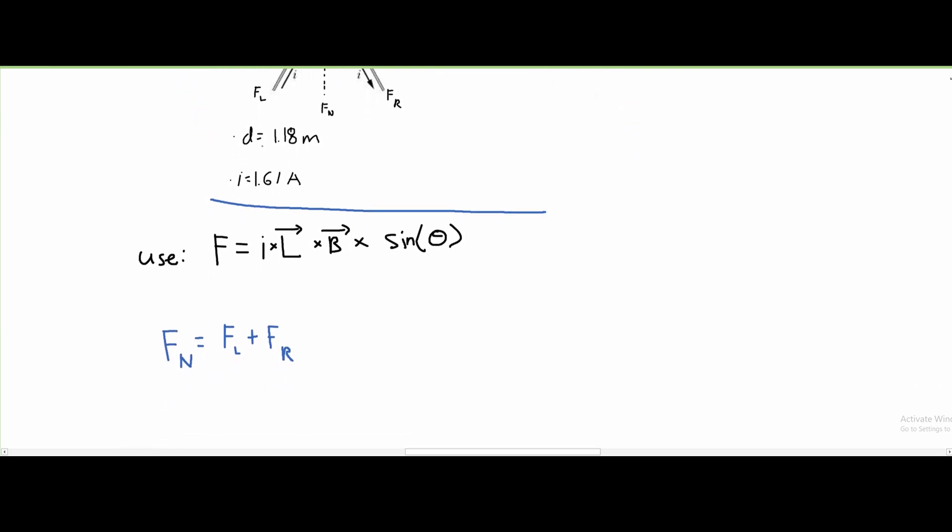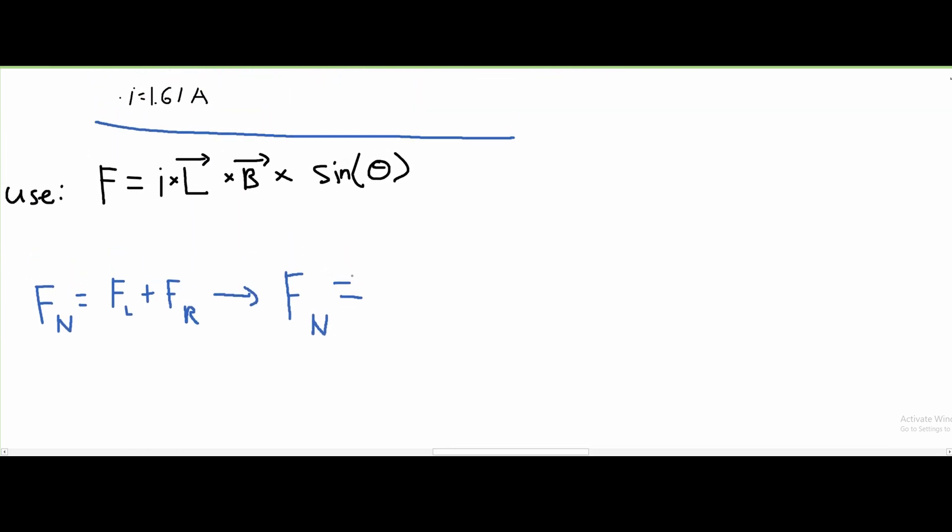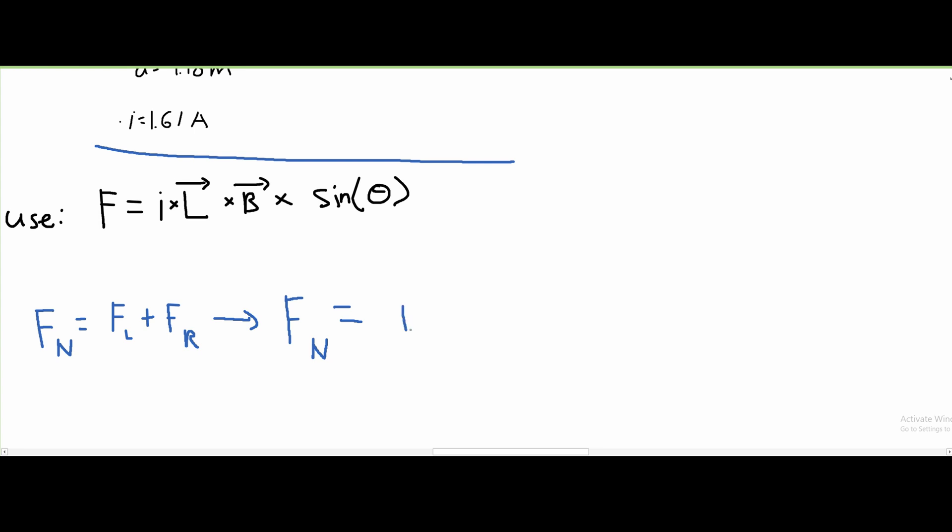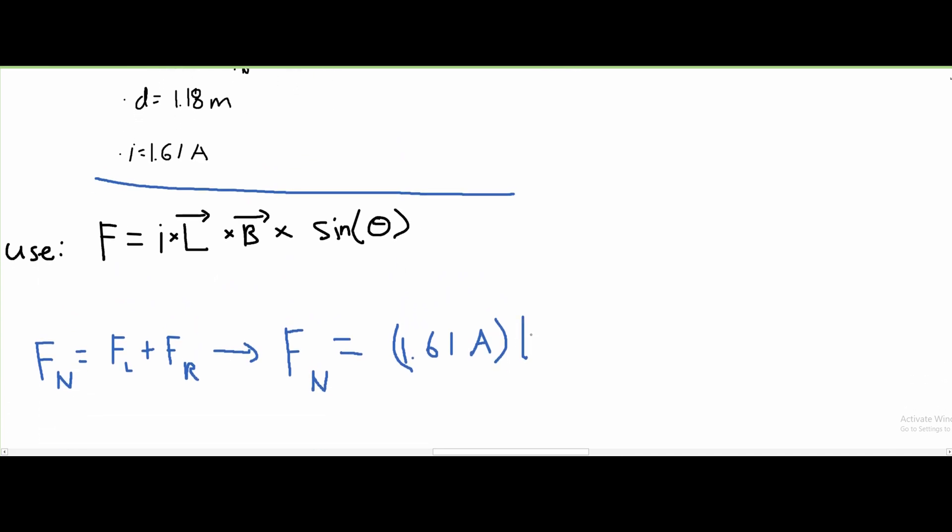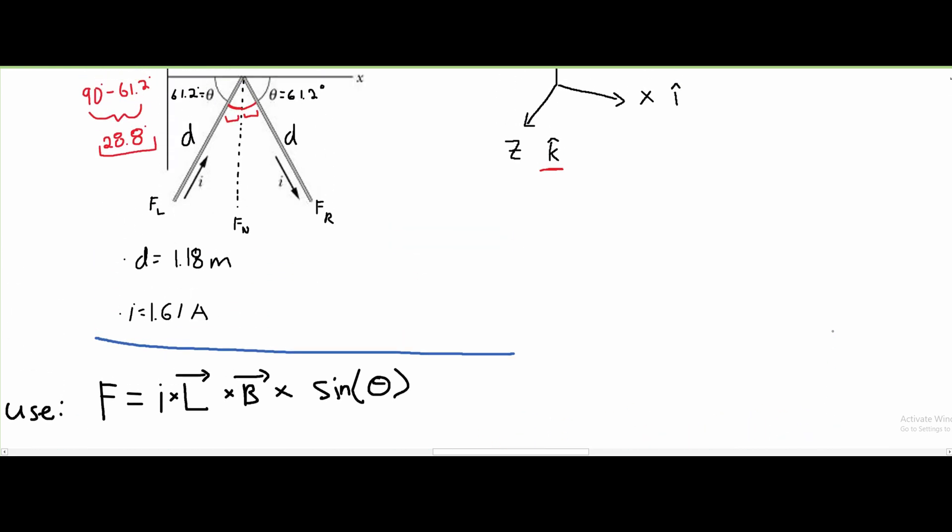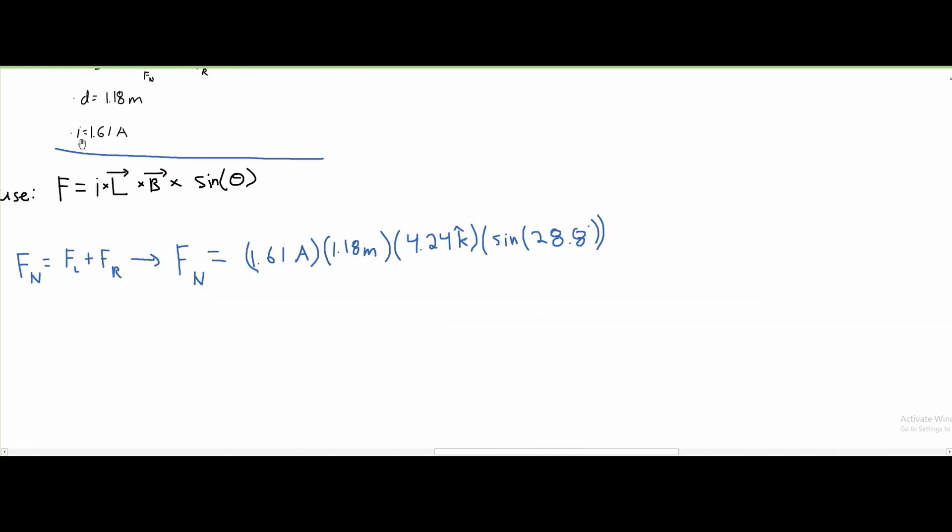When we plug these values in for f_l, we have 1.61 amps times 1.18 meters times the magnetic field 4.24 in the k direction, times sine of 28.8 degrees.